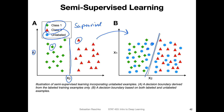Going from here to here, I have not changed the position of the class one and class two examples. However, I added these blue dots, and the machine learning system may use them to put the decision boundary more diagonally. Of course, it makes the assumption that this data point is actually one of the class one ones — it doesn't have to be correct, we don't know, because we don't have labeled information. But we can still use this data to make assumptions, and this can potentially improve the system.